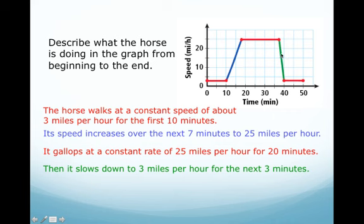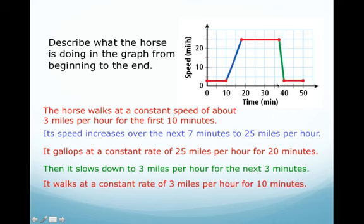So you're either pulling on the reins and it's going to go from 25 miles an hour down to 3 miles per hour in about 3 minutes. And then the last part again is a red line where the horse is probably walking about 3 miles per hour and for 10 minutes.